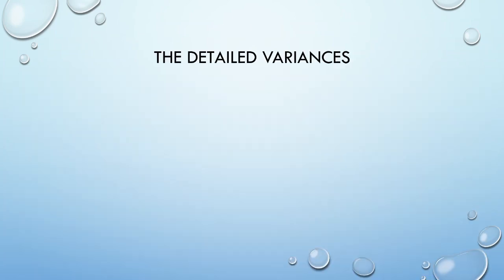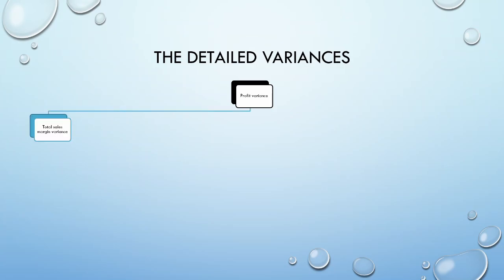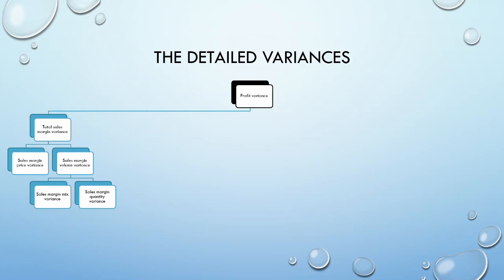To end this video, let us consider the variances that we can calculate, for now within a variable costing system. We will highlight the differences between variable and absorption costing as we proceed. First, we have our profit variance, which represents the total difference between our budgeted and actual profits. This can be broken down into three major categories. The first is our total sales margin variance, which can be further broken down into the price and volume variances. Where we have multiple products, the volume variance can be broken down further into a mix and quantity variance. If we have details on the overall market, the volume variance can also be broken down into the market size and market share variances.